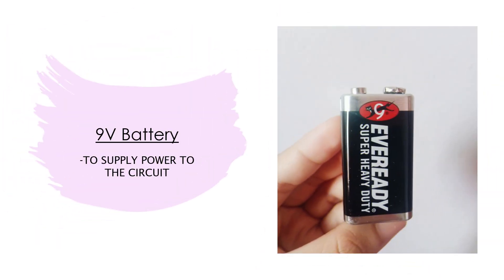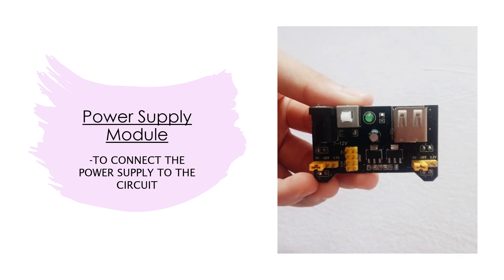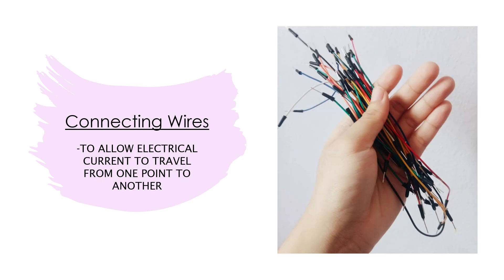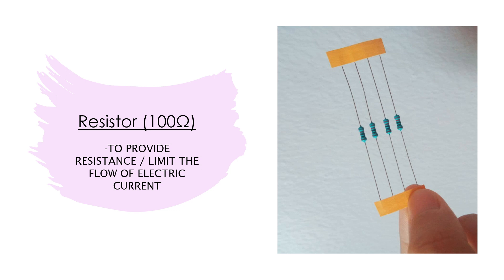These are the components that were used in the project. First, I used a 9V battery to supply power to the circuit. I also used a power supply module to connect the power supply to the circuit. I used a breadboard as a construction base for the prototype of my logic circuit, and connecting wires to allow electrical current to travel from one point to another.